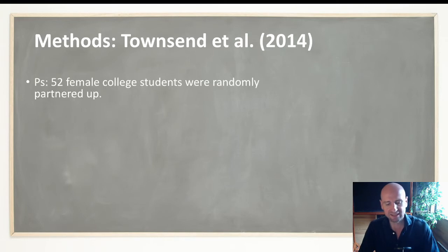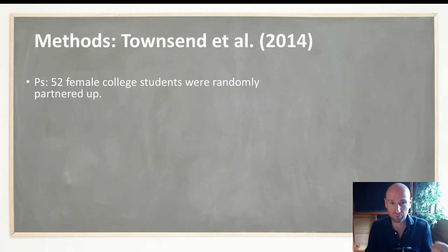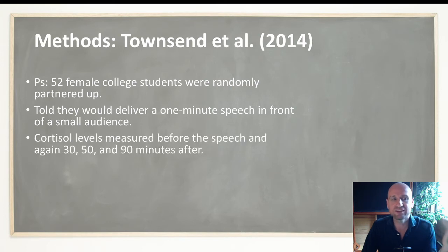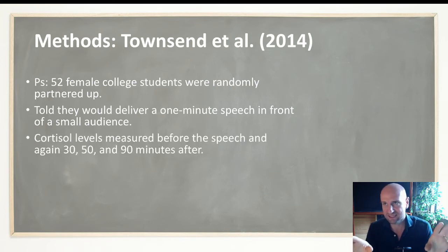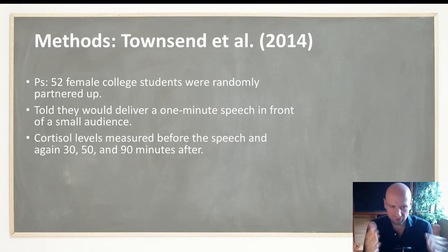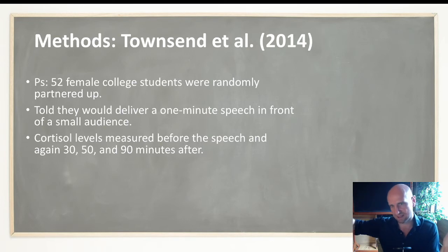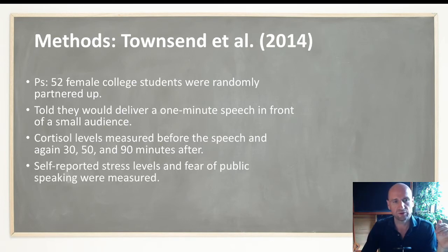The key study that shows the effects of social support on the stress response was by Townsend. They had 52 female college students and did a one-minute speech task — similar to the TSST but not the official procedure. They measured cortisol levels at 30, 50, and 90 minutes, so they did before and after measures spaced out.